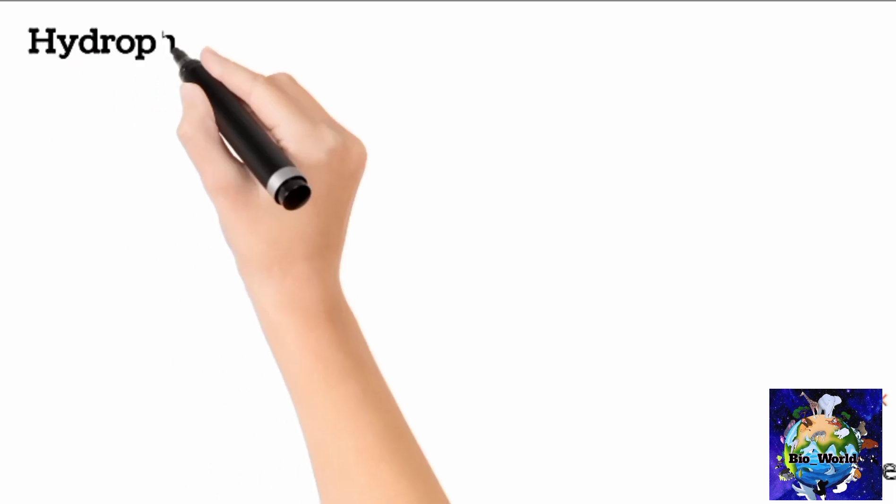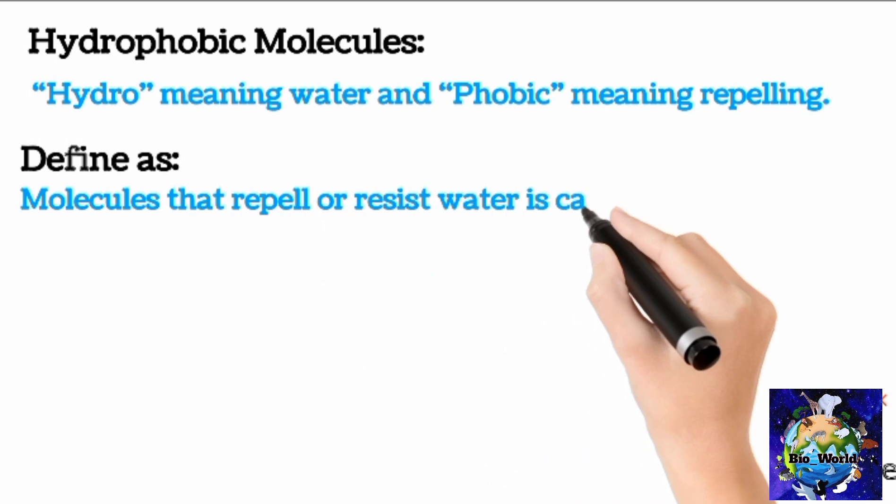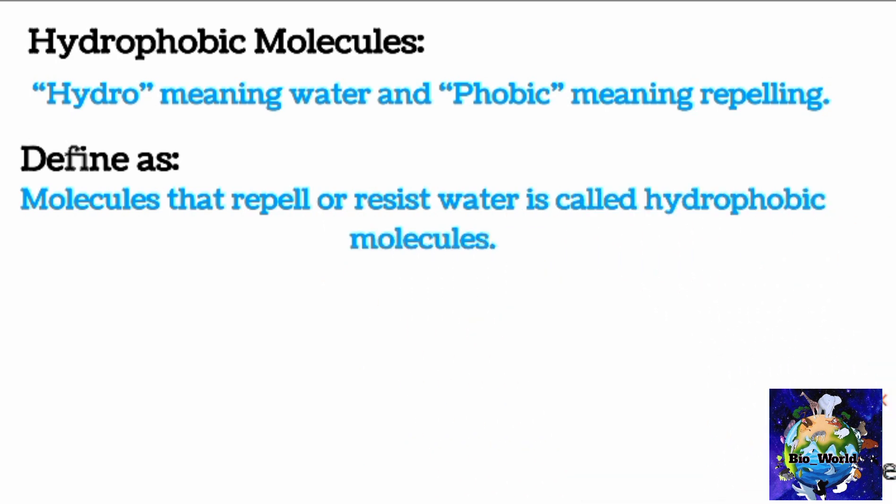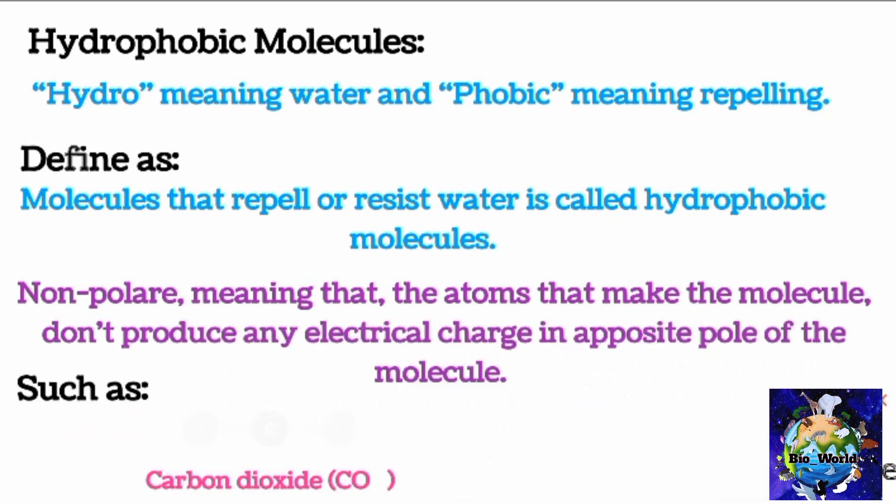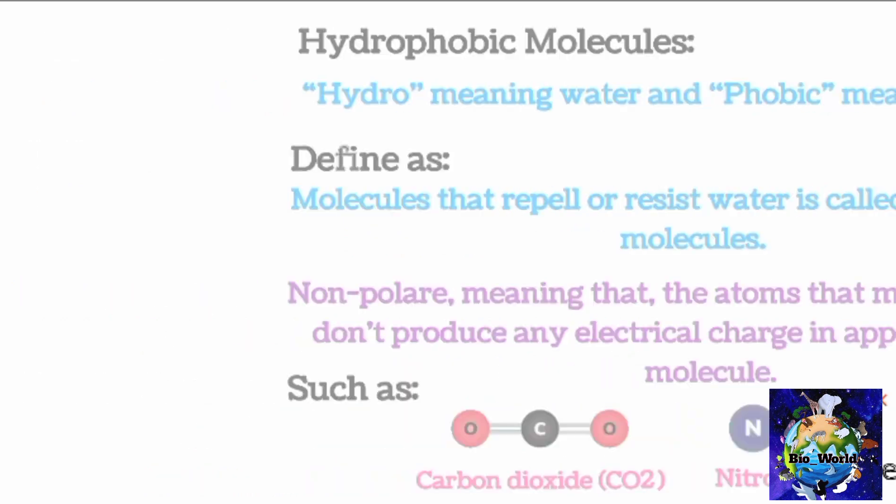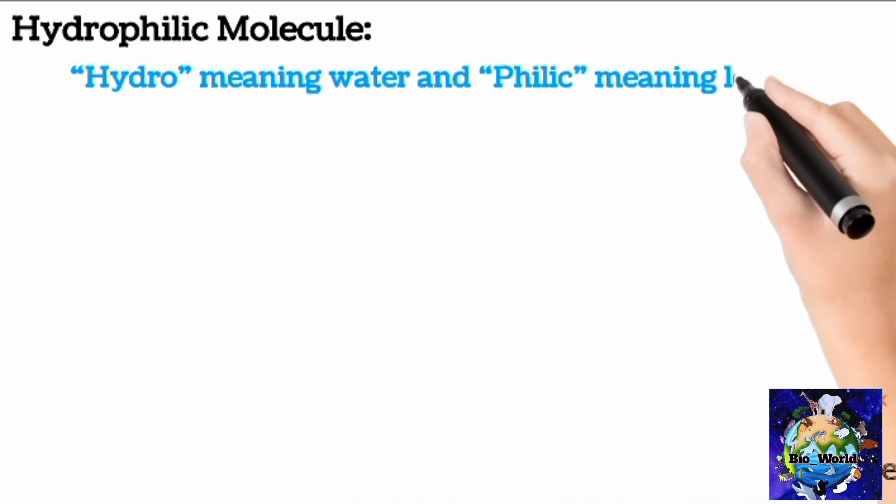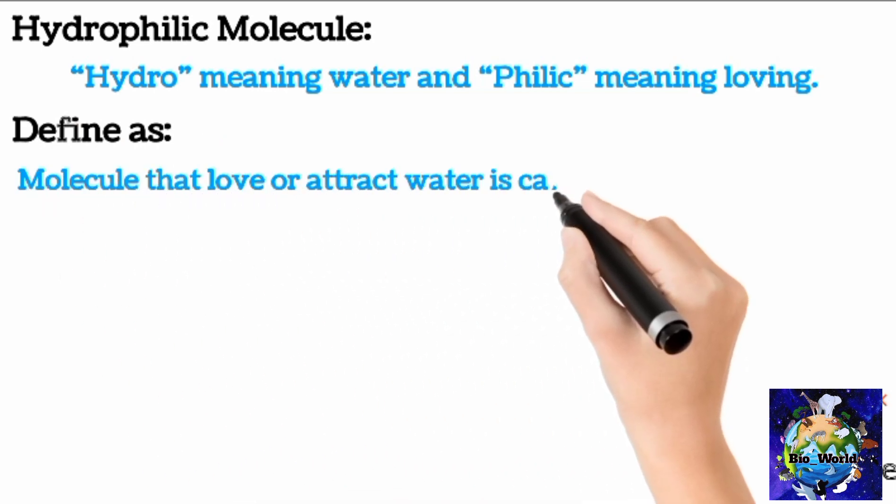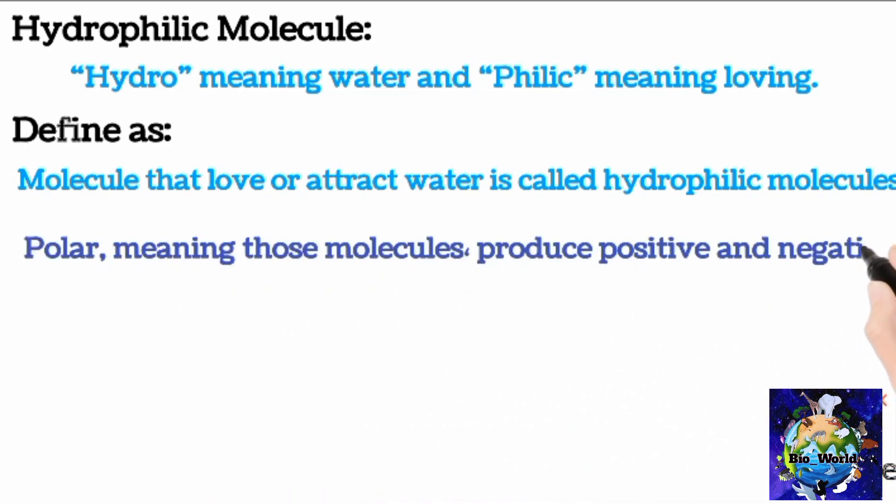But here we must be aware of certain terms used just before a while, such as hydrophobic molecules. Hydro meaning water, phobic meaning repelling. So we can define as molecules that repel or resist water are called hydrophobic molecules. Hydrophobic molecules are usually non-polar, non-polar meaning the atoms that make the molecule don't produce any electrical charge in opposite poles.